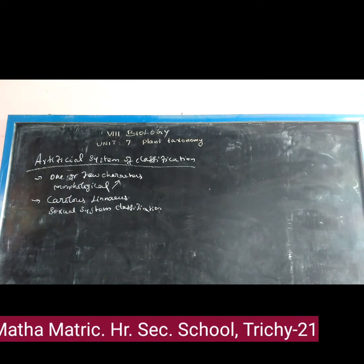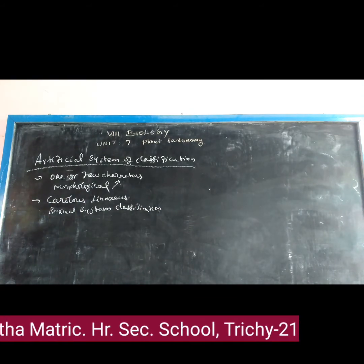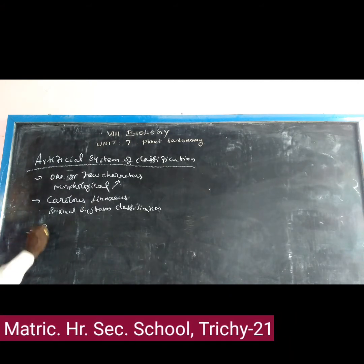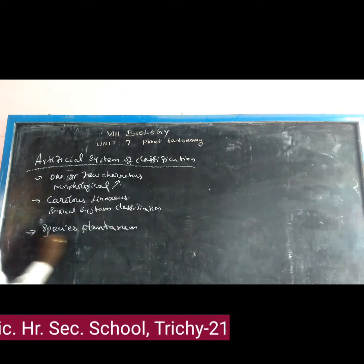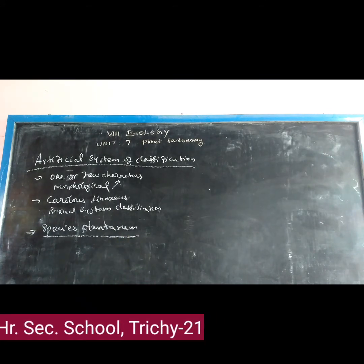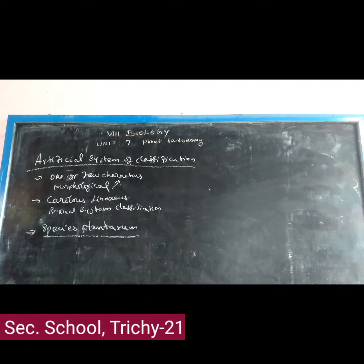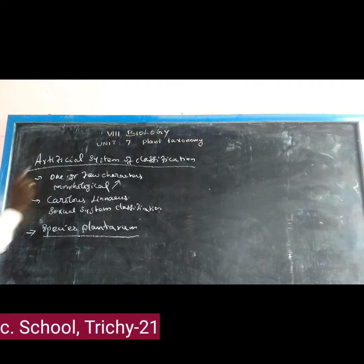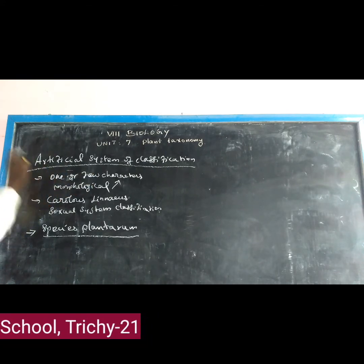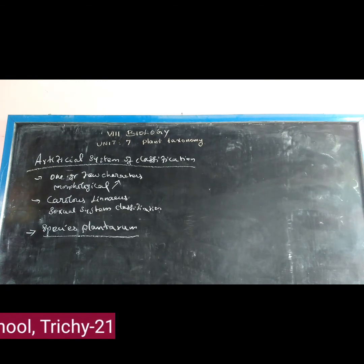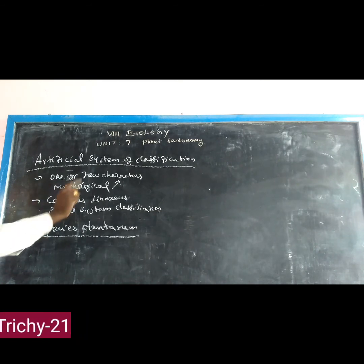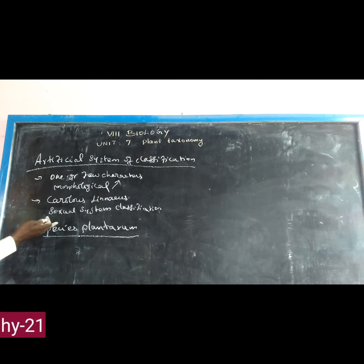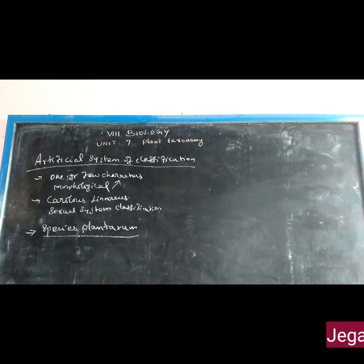Carolus Linnaeus wrote different types of books. One of the books is called 'Species Plantarum.' The Artificial System of Classification is based upon one or two morphological characters. The system of classification was proposed by Carolus Linnaeus, mainly as a sexual system of classification.